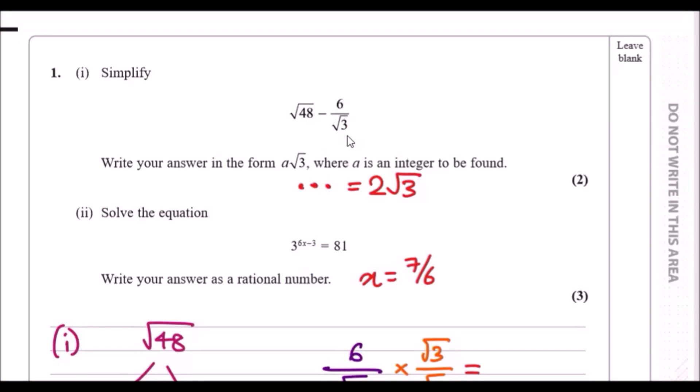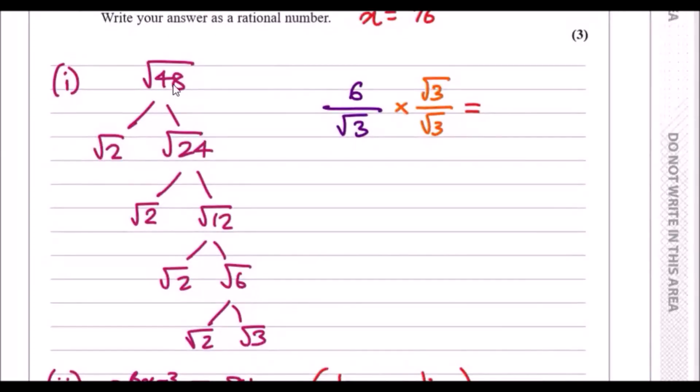Looking at root 48, my tip is to always use factor trees - break them down to products. 48 can be seen as 2 times 24, and 24 can be broken down as 2 and 12. 12 can be broken down as 2 times 6, and 6 can be broken down as 2 times 3.